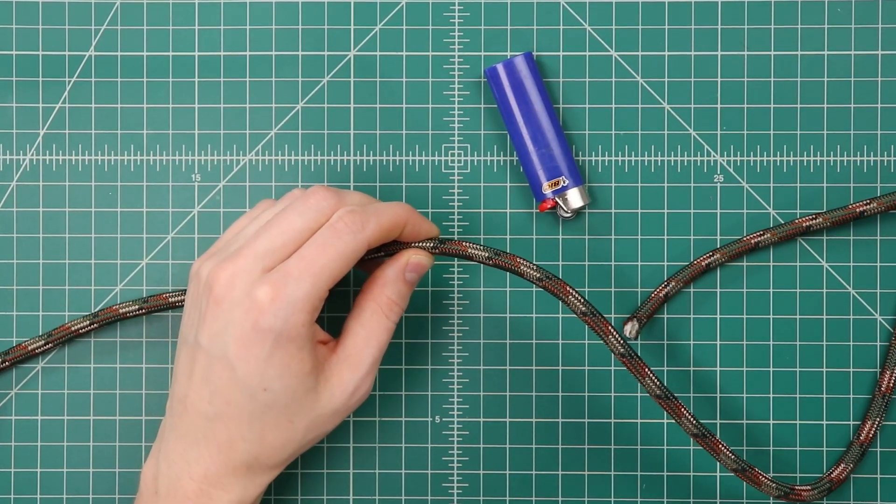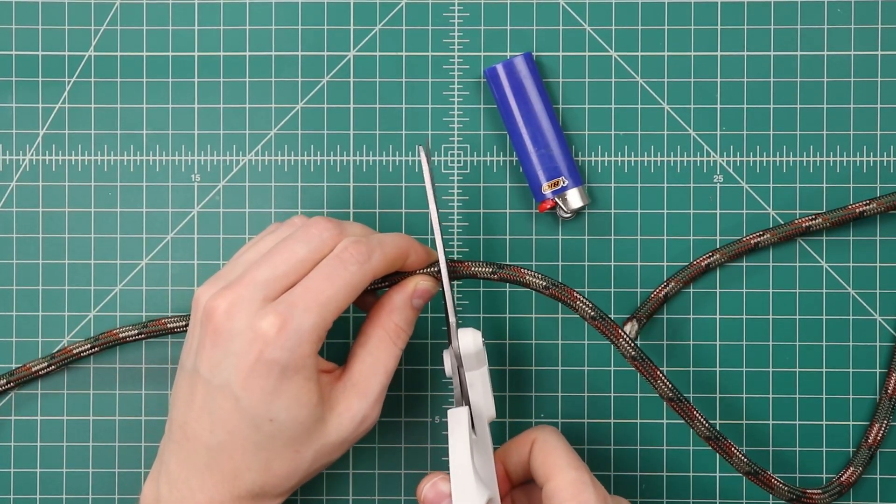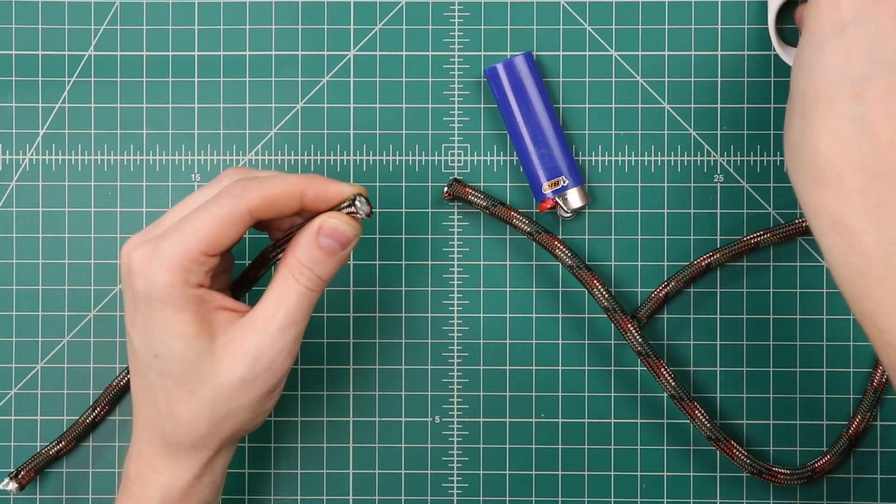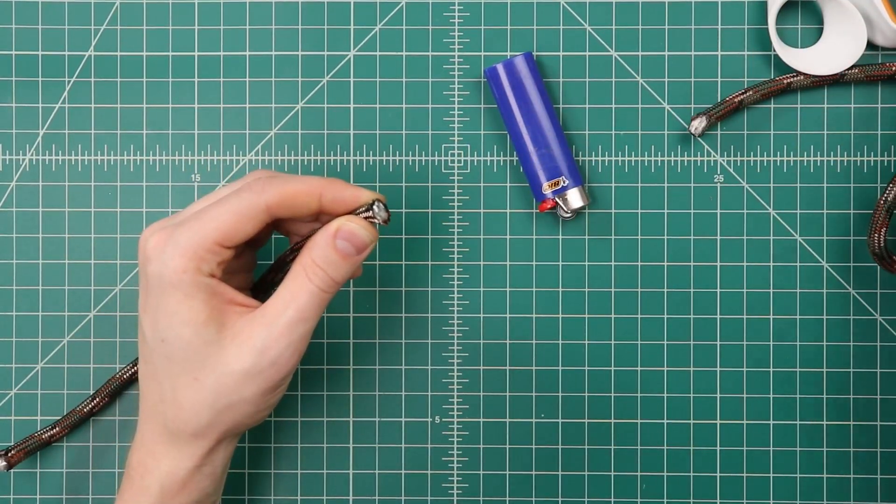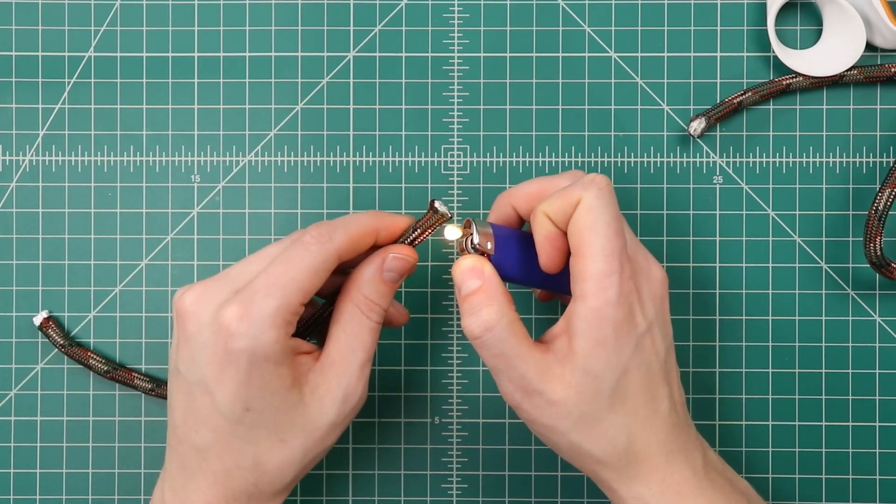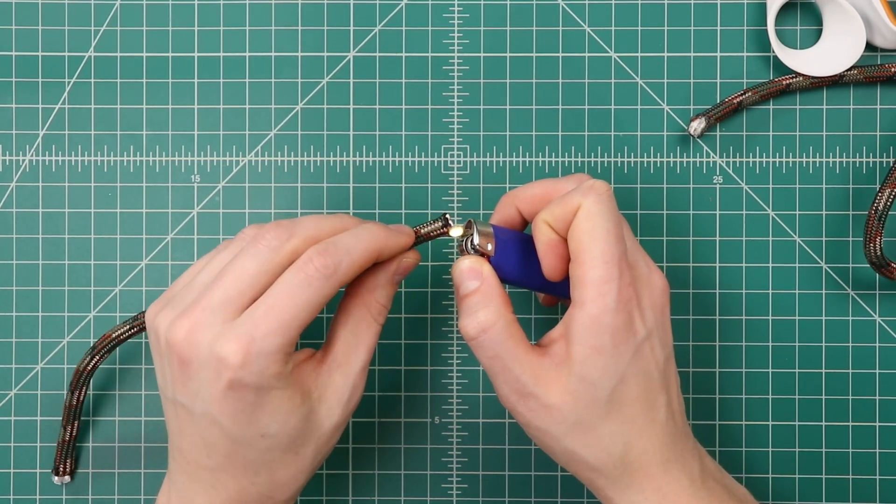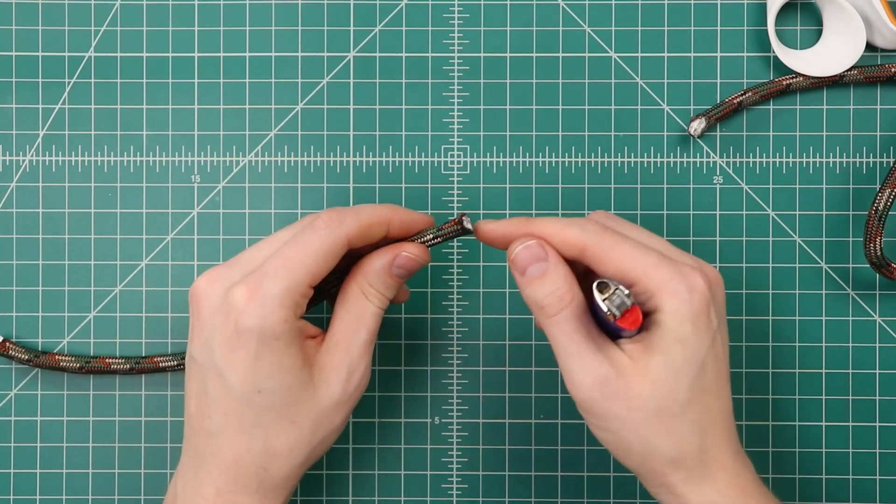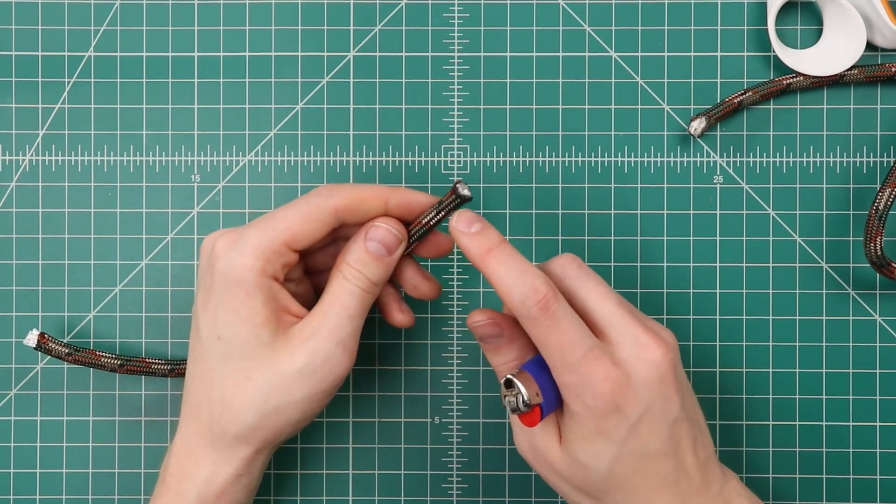You can go ahead and cut that, and before it frays too much, just melt it a little bit around the outside. Don't give it a full melt because we need to get access to the middle, but just seal those outer edges. Otherwise, you're going to lose a lot of length there when it all frays.